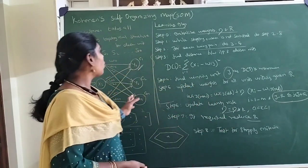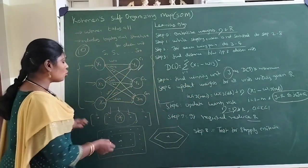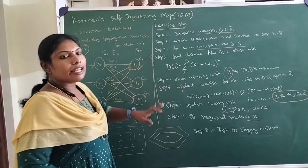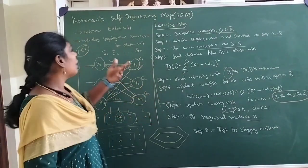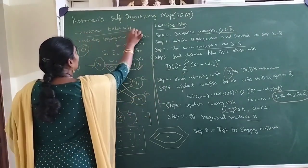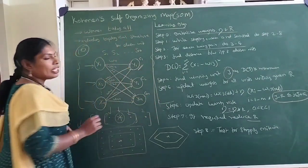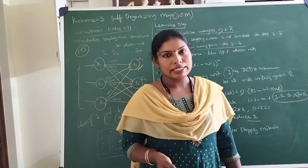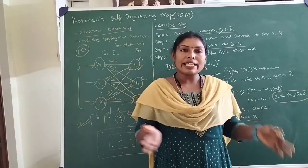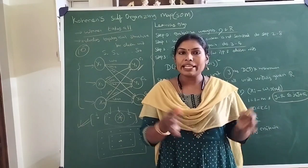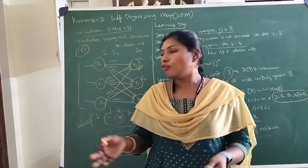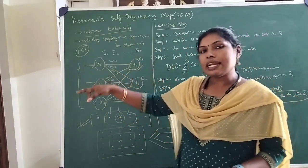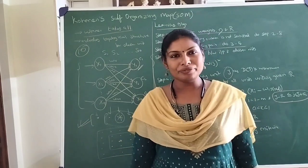So this is how your self-organizing map works. Topological preservation is very important, along with the way it clusters data in unsupervised learning — winner takes all. These two are the important principles followed by the self-organizing map. In the next session, I will give you an example of all this algorithm working so that you will understand it better. Thank you.